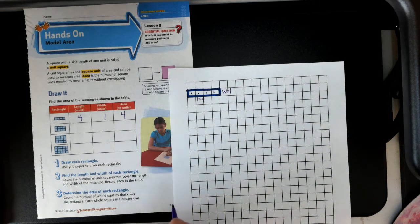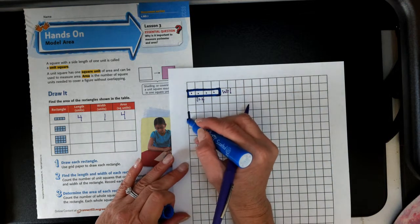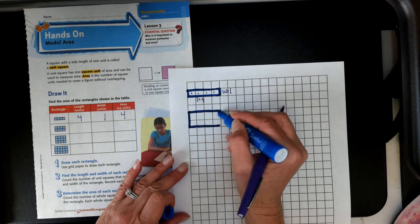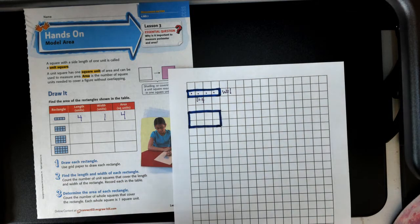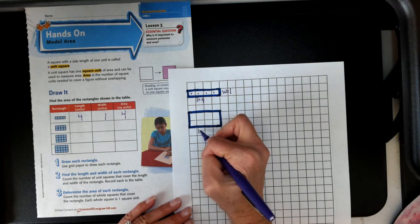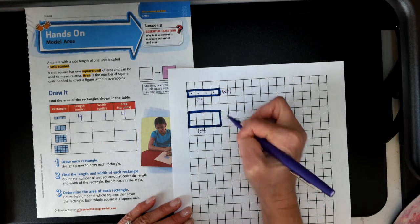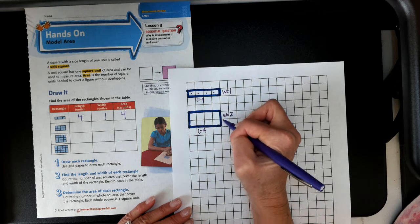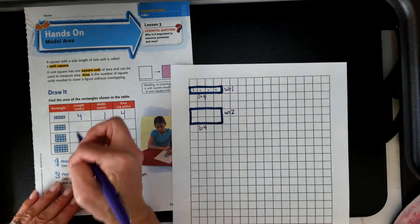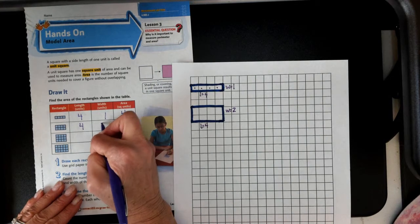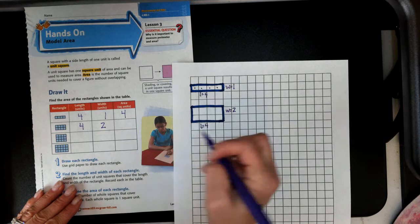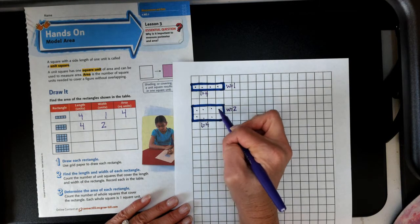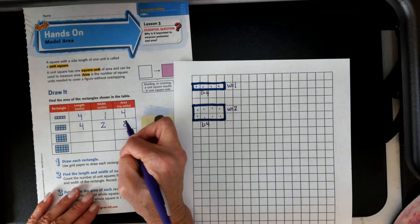Let's try another one. We would go down two and over four. Then my length is going to still be four, but my width has changed. It's now two squares deep. So length is still four, the width is two, and I have a total of one, two, three, four, five, six, seven, eight. Eight square units.